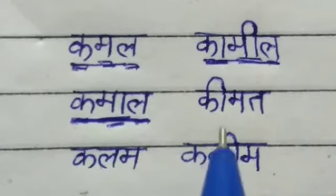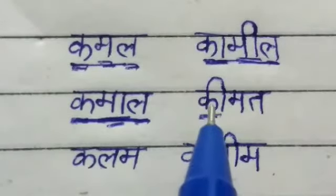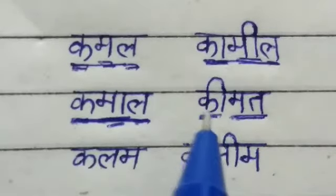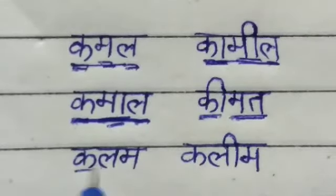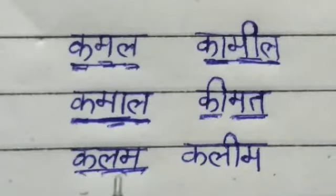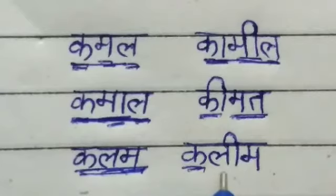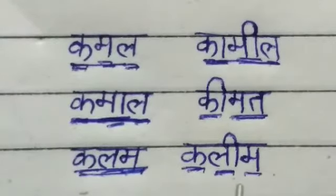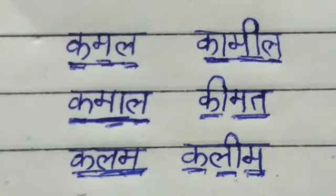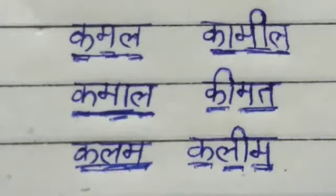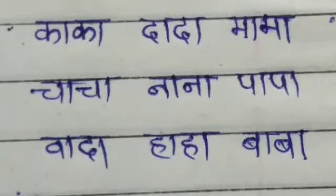Kamal Ki Mat — this is Valenti. Ka Valenti Ki, Ma Ta Mat — Ki Mat. Ka La Ma — Kalam. Ka Li Ma — Kalim. Kalim.